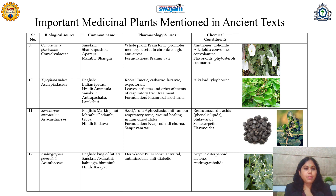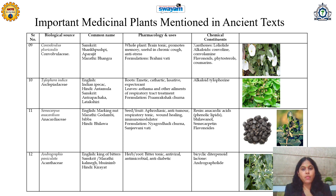Next is Tylophora indica, belonging to family Asclepiadaceae, called as Indian Ipecac. In Hindi, it is called as Antamul; in Sanskrit, Antrapachaka; and in Marathi, it is called as Dhamvail, because its leaves are useful in asthma and other ailments of the respiratory tract. Fruits are useful as emetic, cathartic, laxative, and expectorant. In COVID-19 also, it was popularized due to its effect on respiratory tract disease treatment. These efficacies are due to the presence of the alkaloid Tylophorine. Its popular formulation is Pranarakshak Churna.